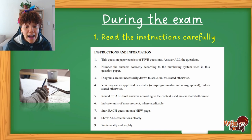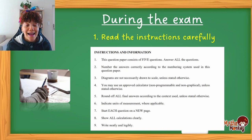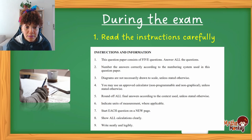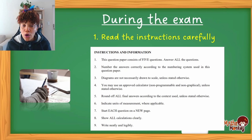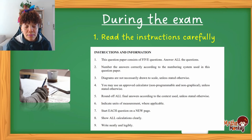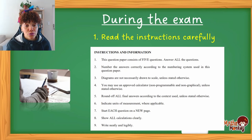Instruction number five: round off all final answers according to the context, unless stated otherwise. The context means the story of the question. If the story involves money, round off to two decimal places including cents. If the question refers to human beings, you won't say 4,000.25 human beings — you only get whole numbers as people, so round to a whole person. I have an entire video on mastering rounding off in an exam — I really encourage you to go through that video before you write, and I'll link it in the description box below.